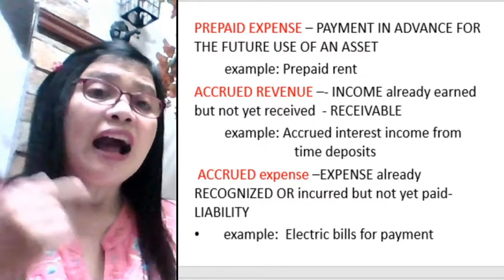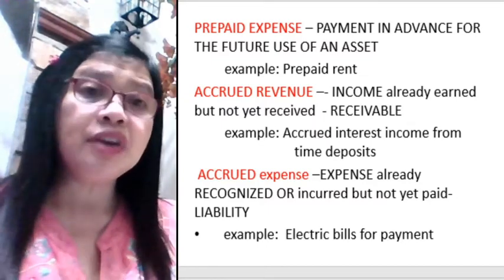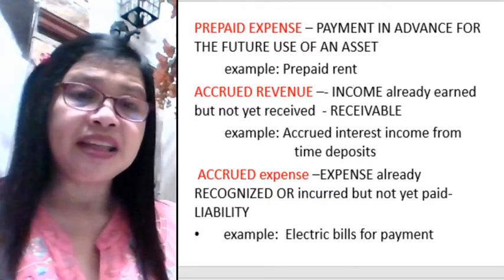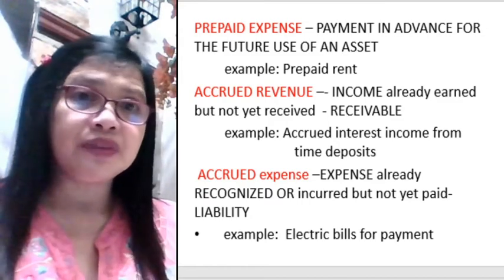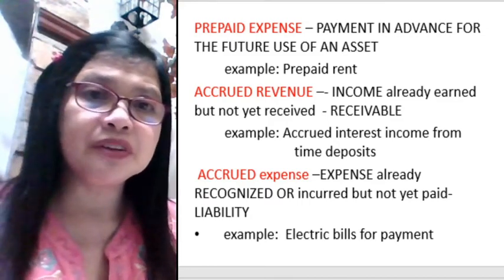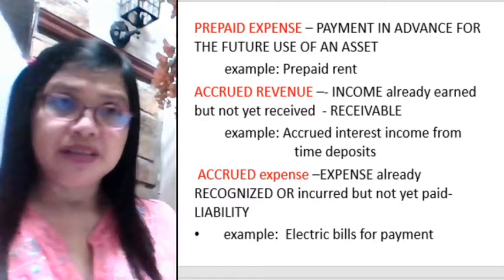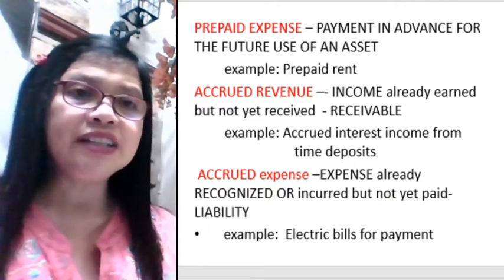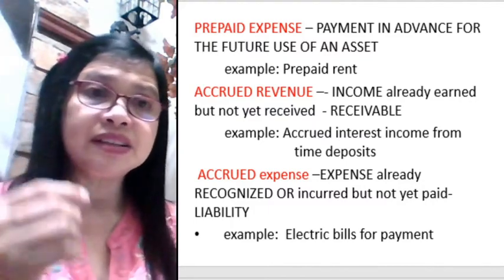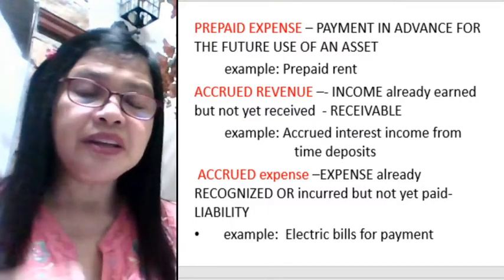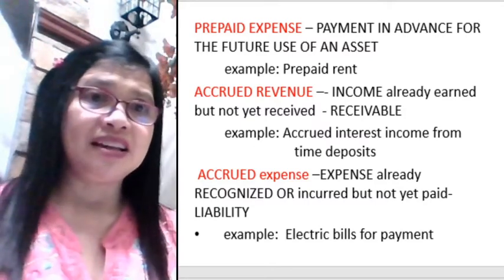Accrued revenue is income already earned but not yet received — in other words, it is receivable. A very good example is accrued interest income from time deposits or savings accounts. When you put money in the bank, especially in time deposits, you can already accrue the revenue even though it has not yet been received by the client.